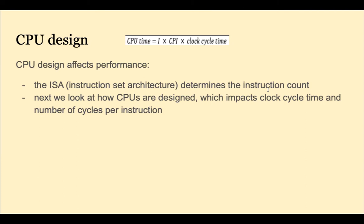Welcome back. In this video we look at the design of the MIPS CPU. The instruction set architecture and the CPU are designed together. Designers determine what types of instructions the CPU should execute and how long it takes to execute each one. The instruction count of a program depends largely on the ISA. Next we look at how CPUs are designed, which impacts the clock cycle time and the number of cycles per instruction.